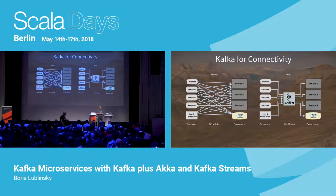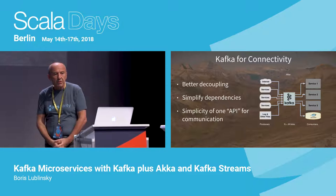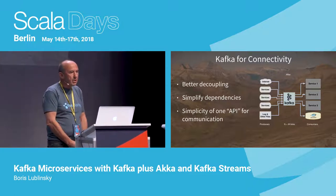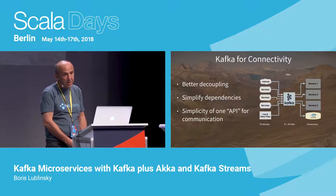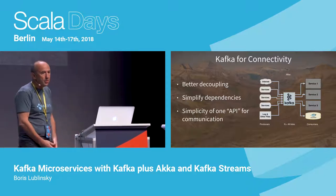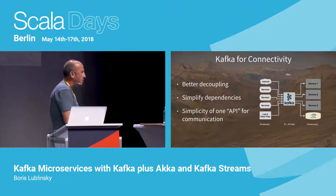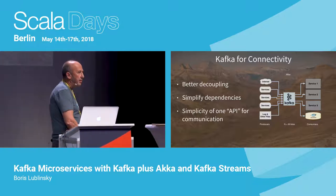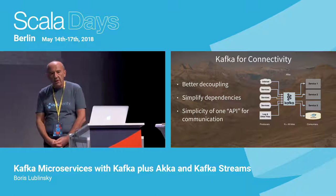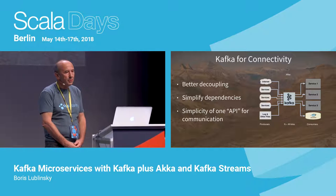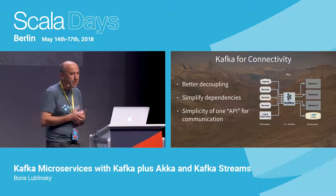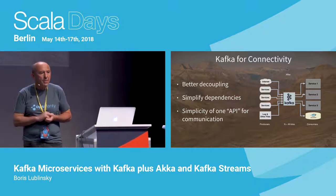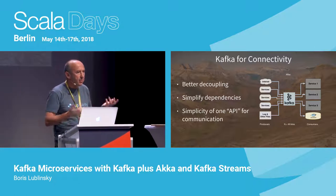In reality it can be Kafka, ProVega, or Apache Distributed Log — they all provide similar functionality and APIs. The key benefit is better decoupling: you have complete temporal decoupling because Kafka stores messages persistently. If your recipient goes down, the messages are stored in the log and when it comes back up it starts receiving them. It simplifies dependencies because your provider doesn't care who the consumers are, and there is simplicity of a single API for the majority of communications.